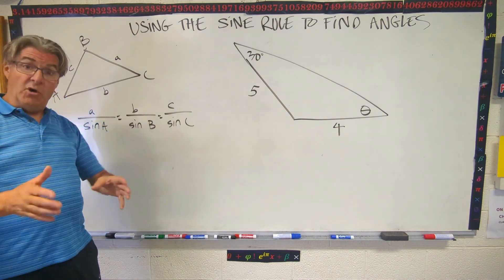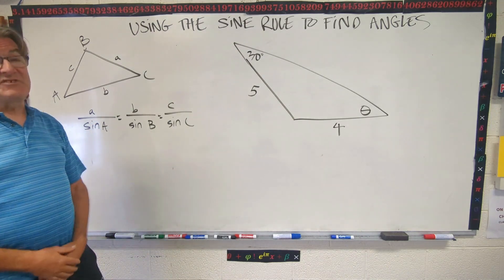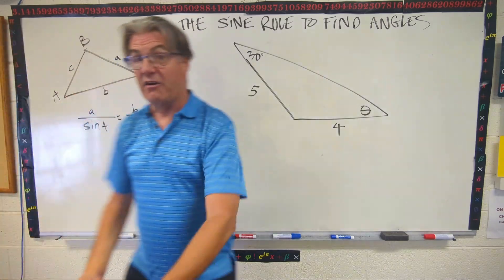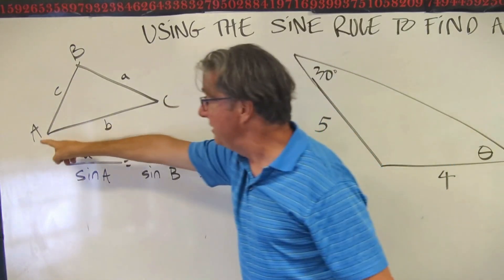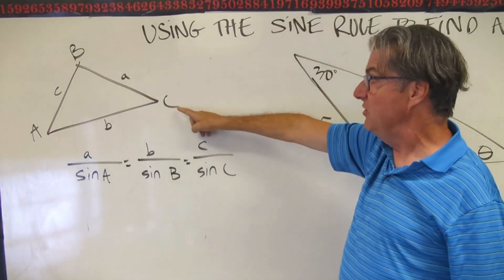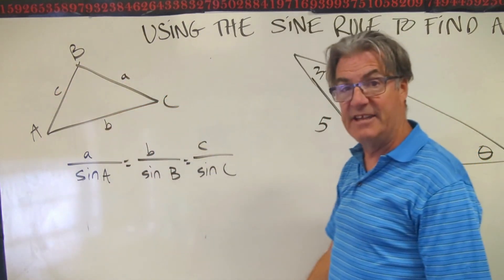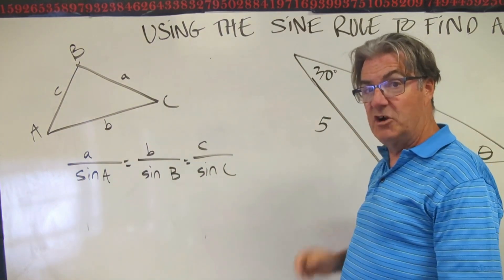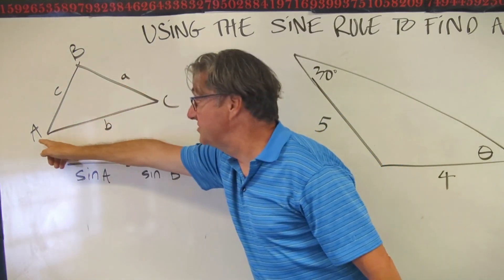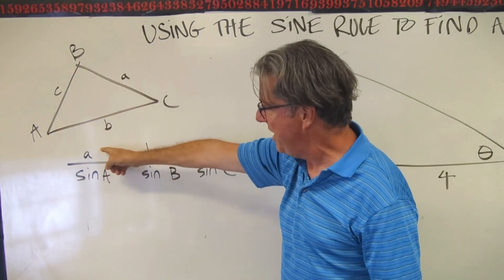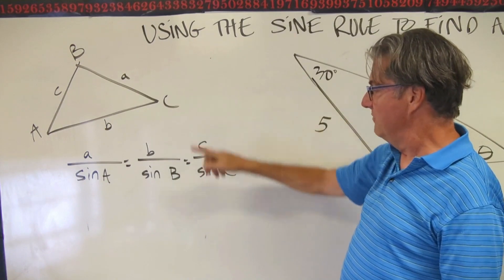Just like with SOHCAHTOA trigonometry where we found sides and then angles, you can also do the same thing with the sine rule. So check it out. Here's the sine rule. I just gave us that same old diagram. The big letters represent the angles—they're the corners of the vertices of the triangle. And then the little letters represent the lengths of the sides. So the sine rule is all about ratios and you have three of them: the ratio of the side over the sine of the opposite angle. So a over sine A equals b over sine B equals c over sine C.